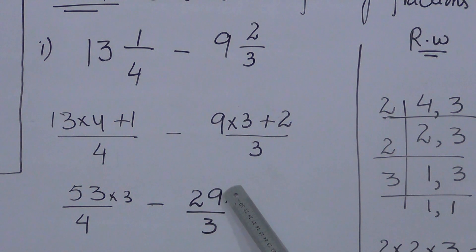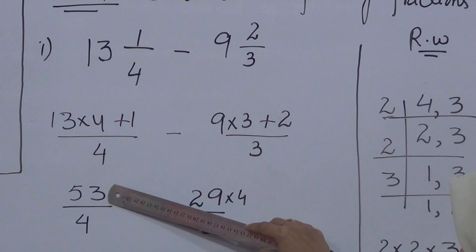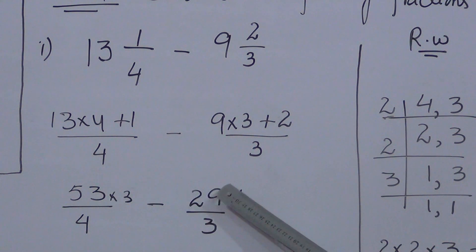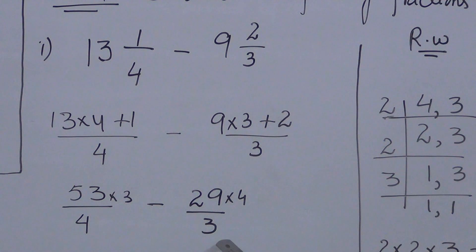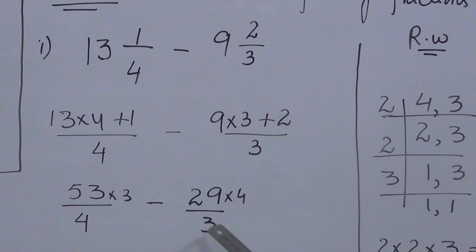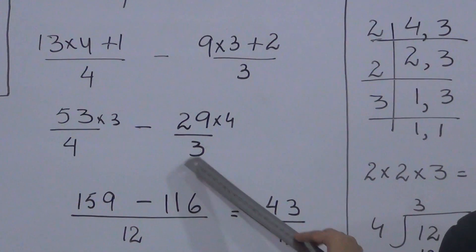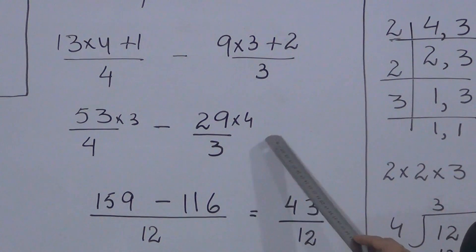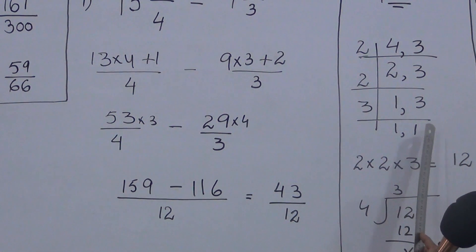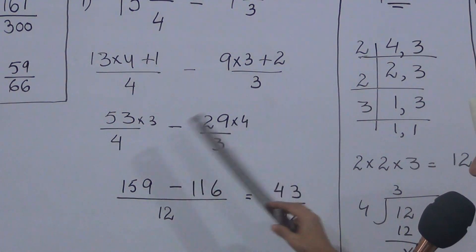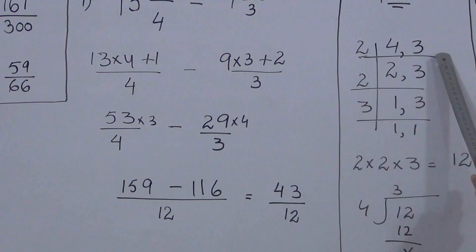After converting to improper fractions, the same steps follow as in Exercise 3 — we take the LCM of the denominators to get a common denominator. The denominators of the two fractions are 4 and 3. We use the prime factorization method: 2 divides 4, giving 2; 3 remains as is. Then 2 divides 2, giving 1; 3 remains. Then 3 divides 3, giving 1.